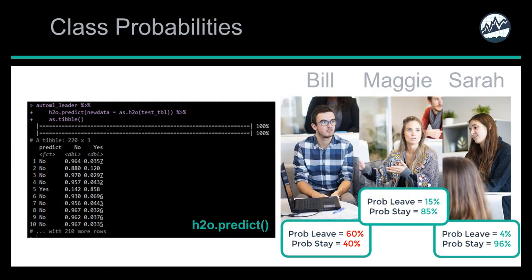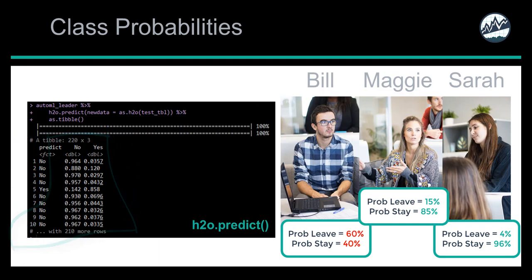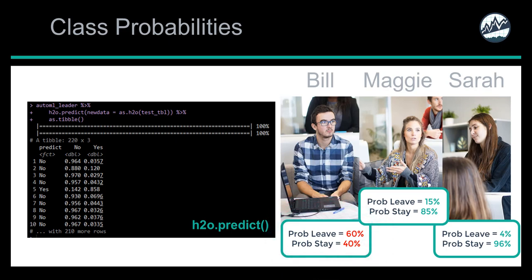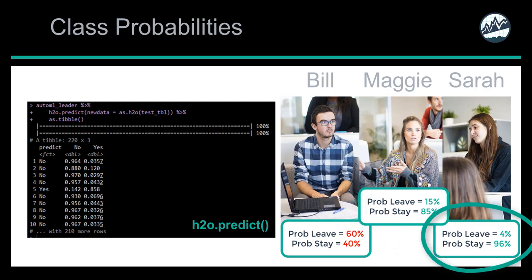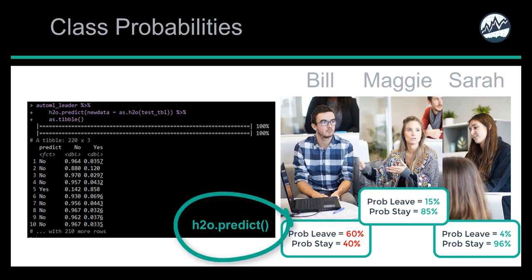Class probabilities are the probability of leaving and the probability of staying for each person. Bill's probability of leaving is 60% and his probability of staying is 40%. Maggie's probability of leaving is 15% and her probability of staying is 85%. Sarah's probability of leaving is 4% and her probability of staying is 96%. These are generated by the H2O predict function, which reports class probabilities in columns 'no' and 'yes', representing stay and leave respectively.